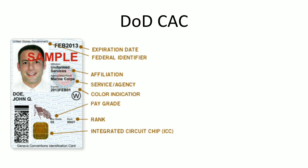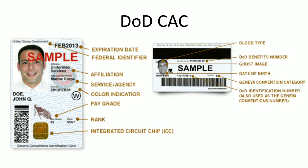This is the Department of Defense Common Access Card. It contains various details including a barcode, an IC chip, and a magnetic strip on the back. This card can be read by a barcode reader, inserted into a contact card reader, or swiped on a magnetic reader.